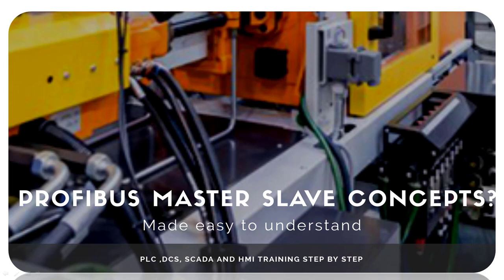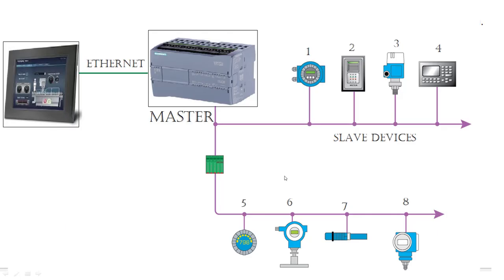Think of a PROFIBUS network. A PROFIBUS network consists of a master and slave arrangement. Devices that are slaves are bound to respond to the master device. Slave devices cannot initiate commands, but master devices are there to initiate the commands, and slave devices are bound to respond to them. Now there is addressing involved and there is a DIP switch.